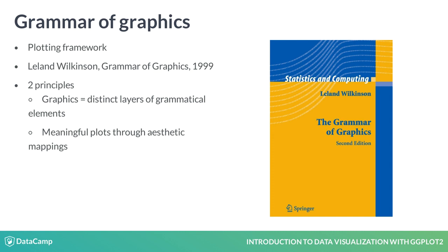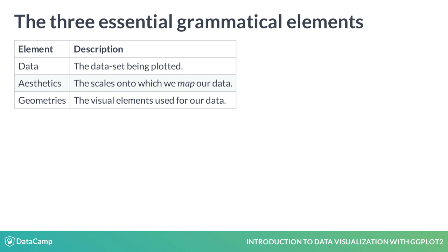To continue our analogy to written grammar, the layers are like the adjectives and nouns, and the aesthetic mappings are like the grammatical rules for how to assemble that vocabulary. There are three essential grammatical elements: data, aesthetics, and geometries. The data is obviously the data which we want to plot. The aesthetics layer refers to the scales onto which we will map our data, and the geom layer refers to the actual shape the data will take in the plot.